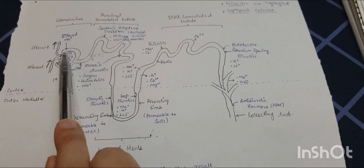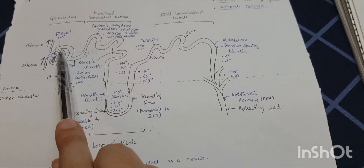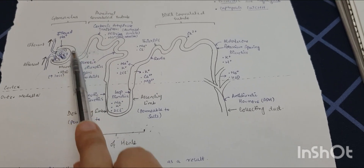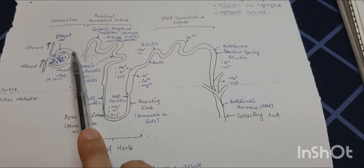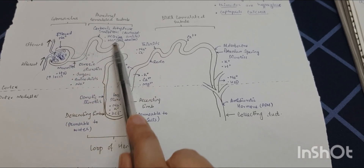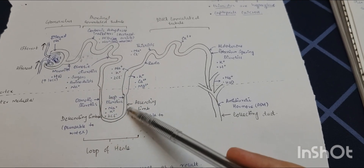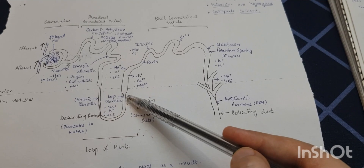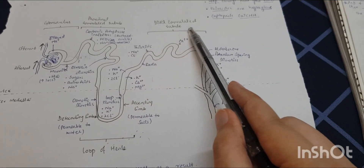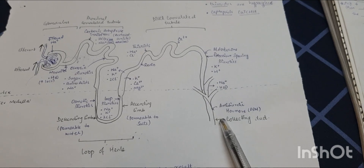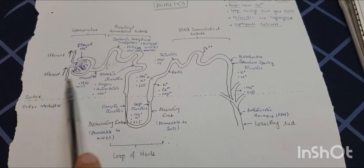First, we have the glomerulus that contains the afferent and efferent vessels combining to form the glomerular tuft, and the Bowman's capsule containing the visceral and parietal surfaces, followed by the proximal convoluted tubule, then the loop of Henle consisting of the descending and ascending thick and thin limbs.